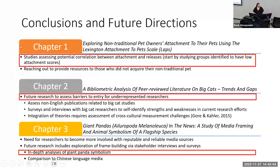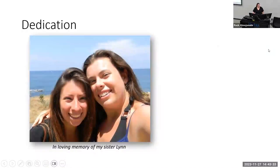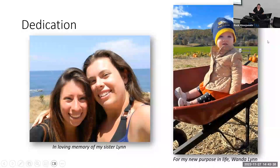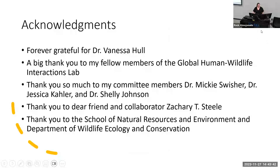Overall conclusions and future directions: for chapter one, there needs to be studies assessing potential correlation between attachment and releases. For chapter two, future research should assess barriers to entry for underrepresented researchers in big cat literature. For chapter three, an in-depth analysis of giant panda symbolism is needed. I dedicate this dissertation in memory of my sister who passed in 2020, and to my beautiful daughter Wanda Lynn, my new purpose in life. Huge acknowledgements to my advisor Vanessa, for being the critical, if not main, reason I was able to finish this. Thank you.